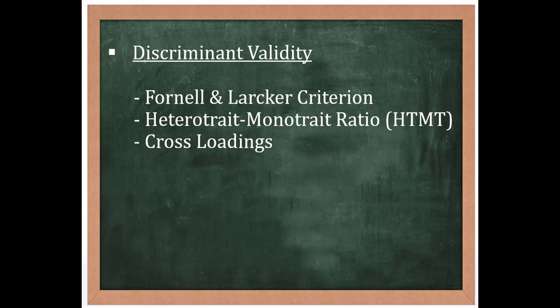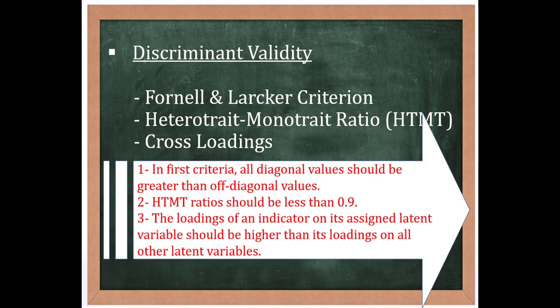In order to measure discriminant validity there are three different methods: Fornell and Larcker, heterotrait-monotrait ratio, and cross loadings. In Fornell-Larcker the benchmark is that all diagonal values should be greater than their off-diagonal values. In second criteria HTMT ratios should be less than 0.9. You can also see in some past papers that researchers have suggested 0.85 ratios.